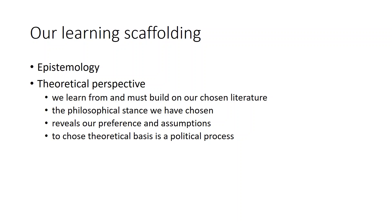After epistemology, we'll look at the theoretical perspective. We learn from and must build on our chosen literature. Whichever literature we look at and journals we read, we've effectively got to take a philosophical stance — we've got to choose a theoretical basis upon which we're going to work. That is a choice; it reveals our preference but also our assumptions, because every theory brings with it a whole set of assumptions about how the world is. To choose a theoretical basis is a political process — we're influenced by the opinions of others, by those we study with and those we read.